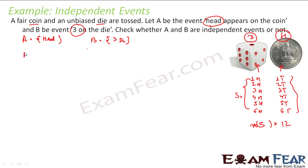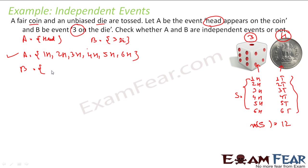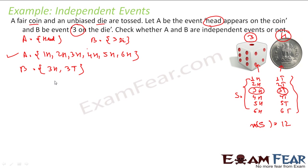Set A contains all elements with a head: 1H, 2H, 3H, 4H, 5H, 6H. Set B contains elements with 3 on the die: 3H and 3T. To prove that A and B are independent, I have to prove that P(A∩B) = P(A) × P(B).